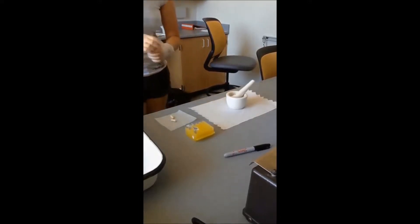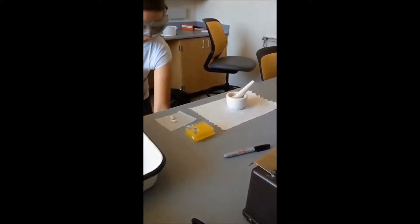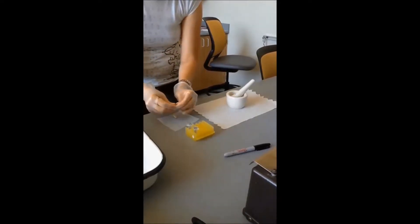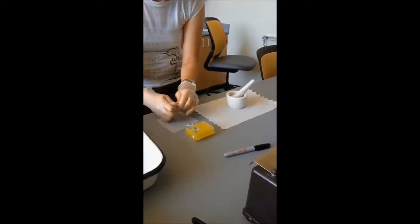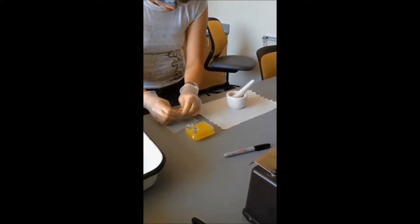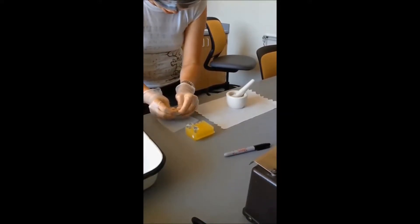So we'll begin while the mortar and pestle is cooling with opening the capsules. They just kind of twist open. Some of them are a little easier than others. Just twist and pull them apart gently.